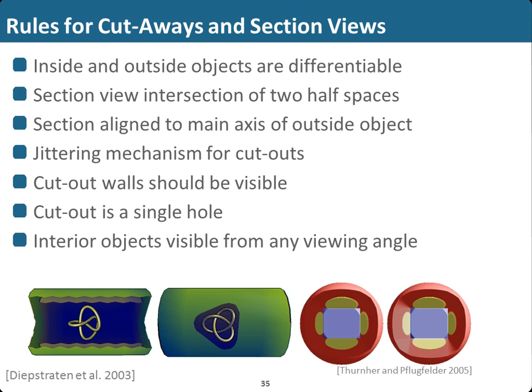Additional rules include a jittering mechanism for cutouts to communicate that an outer layer has been broken to see inside, and cutout walls should be visible — so in a homogeneous medium where gradients are zero and there is no shading, we need to modify the normals on the cut to bring the cut walls visible. Cutout should be a single hole: if you have multiple scattered objects of interest, it's better to make one bigger cut than several thousand small ones. And an interior object should be visible from any viewing angle, communicating that this is a view-dependent technique.